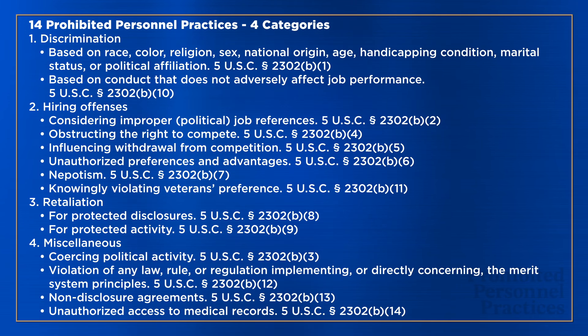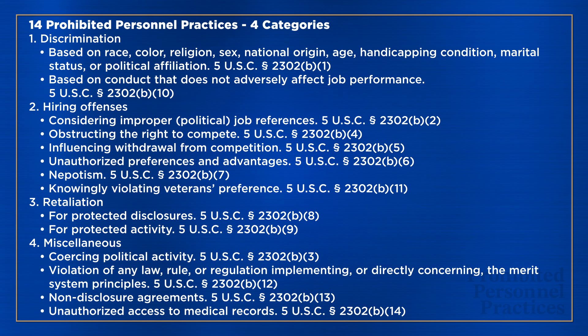In sum, the nine merit system principles are values that we aspire to in the civil service. By contrast, the prohibited personnel practices are the 14 specific activities banned in the civil service because they directly conflict with the values outlined in the merit system principles. Therefore, while agency officials have broad power when managing the federal workforce, they must not engage in discrimination, improper hiring practices, retaliation, or any other activity that violates the laws, rules, or regulations that concern the merit system principles. And unlike the merit system principles, the prohibited personnel practices are not guidelines — they are rules.